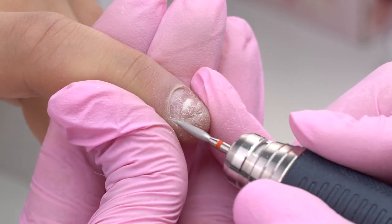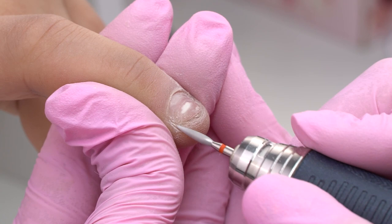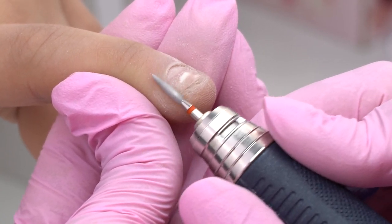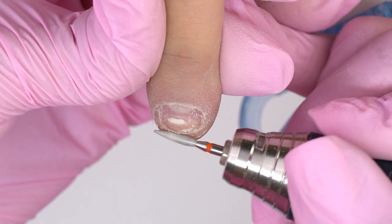Next, I grab a red flame drill bit, 0.21 in diameter, and clean up the areas that I couldn't reach with the safe drill bit. I also process lateral folds and side sinuses.